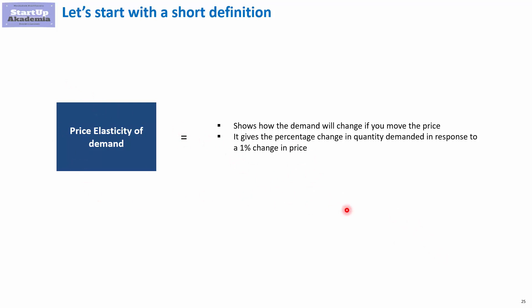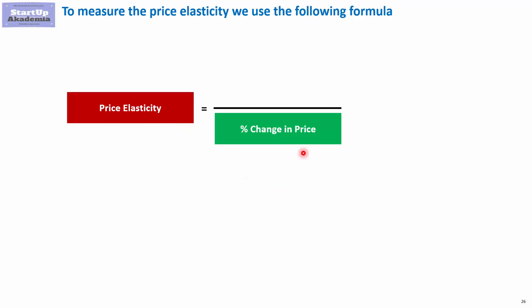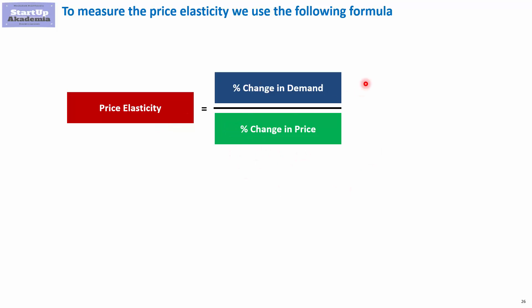To estimate the price elasticity, we use a very simple formula. We have the price elasticity calculated using the percentage change in price which happened, and observing what, as a reaction to this price change, we get as change in demand, again expressed as a percentage of what we had before the price change occurred.